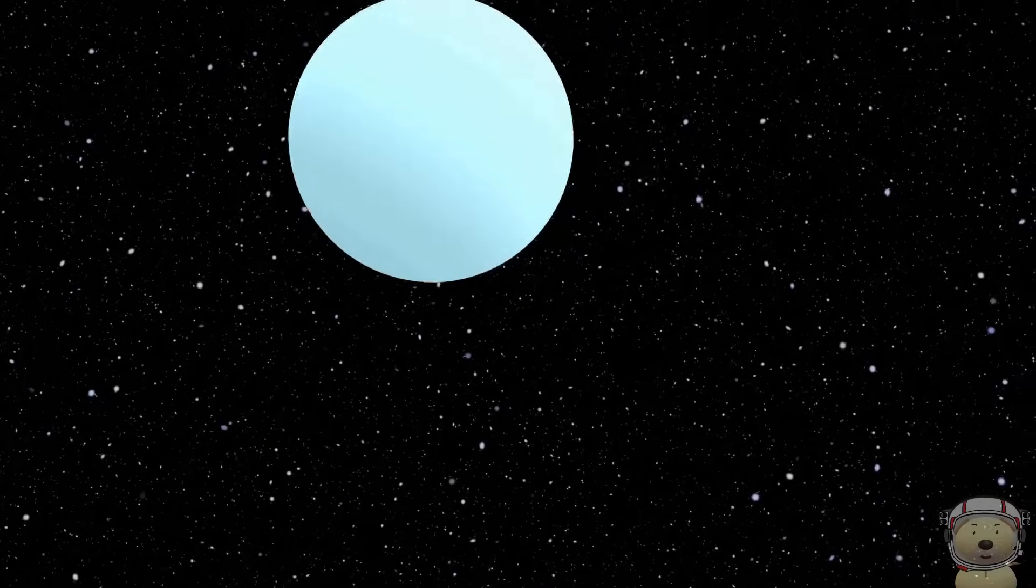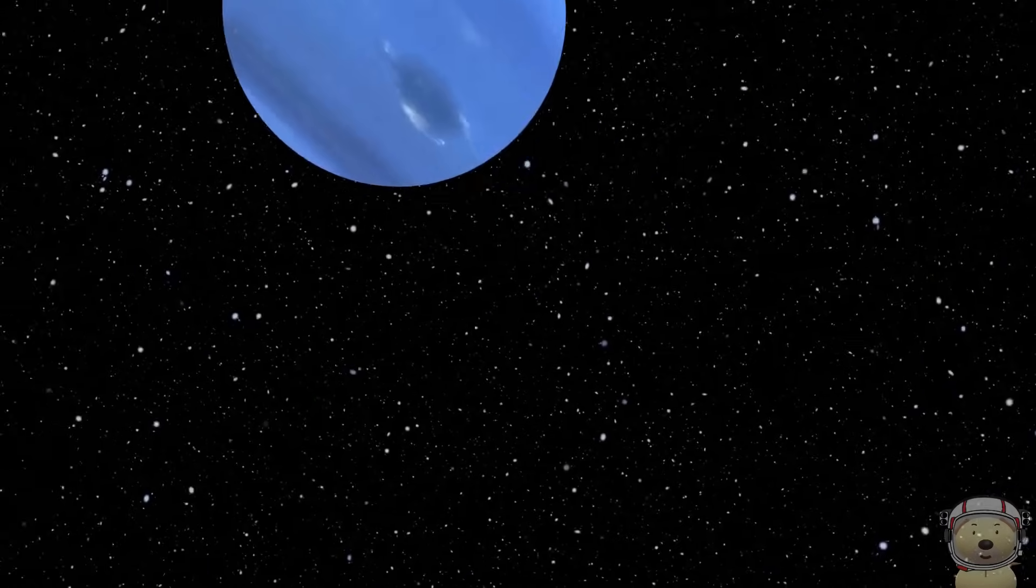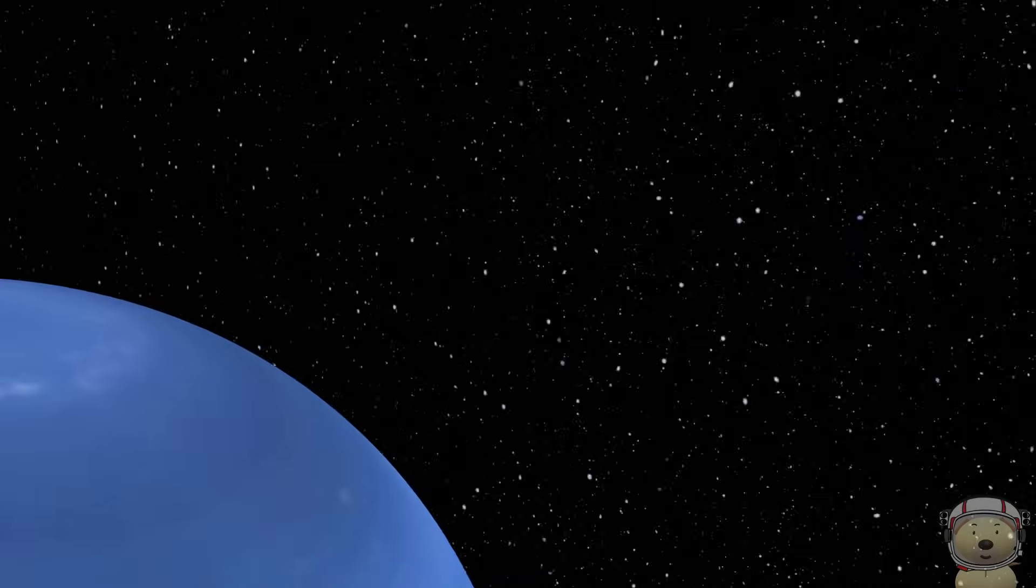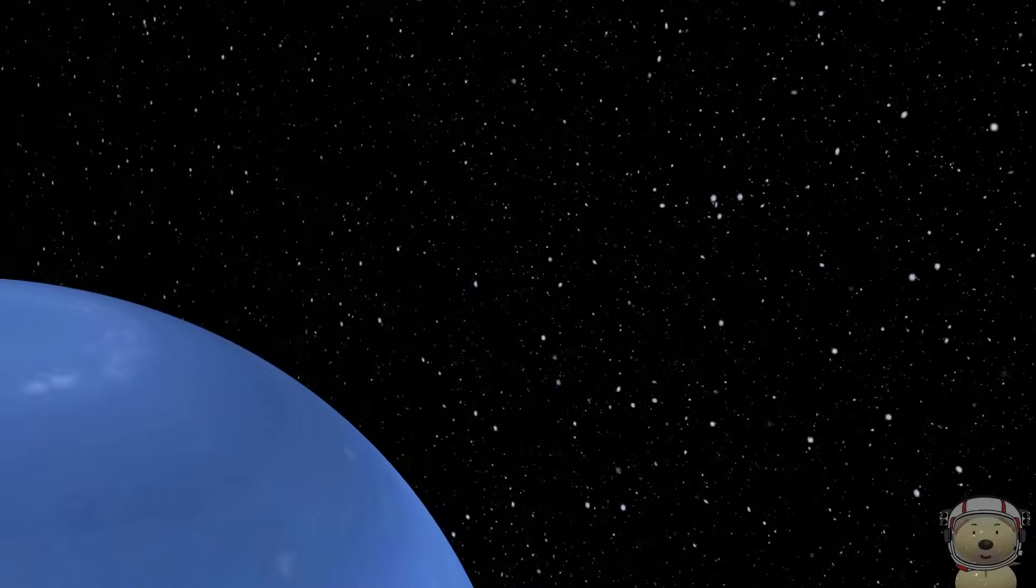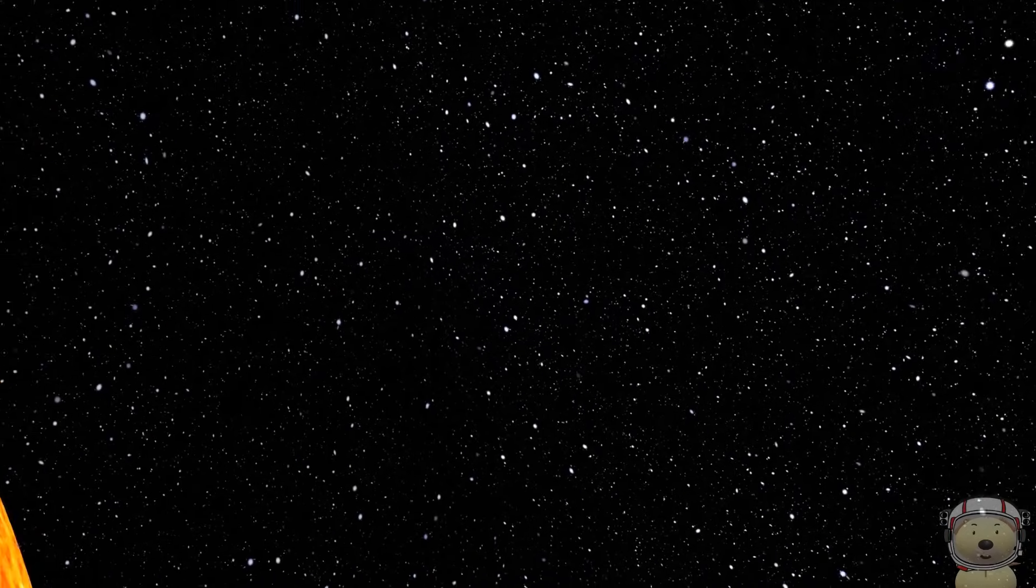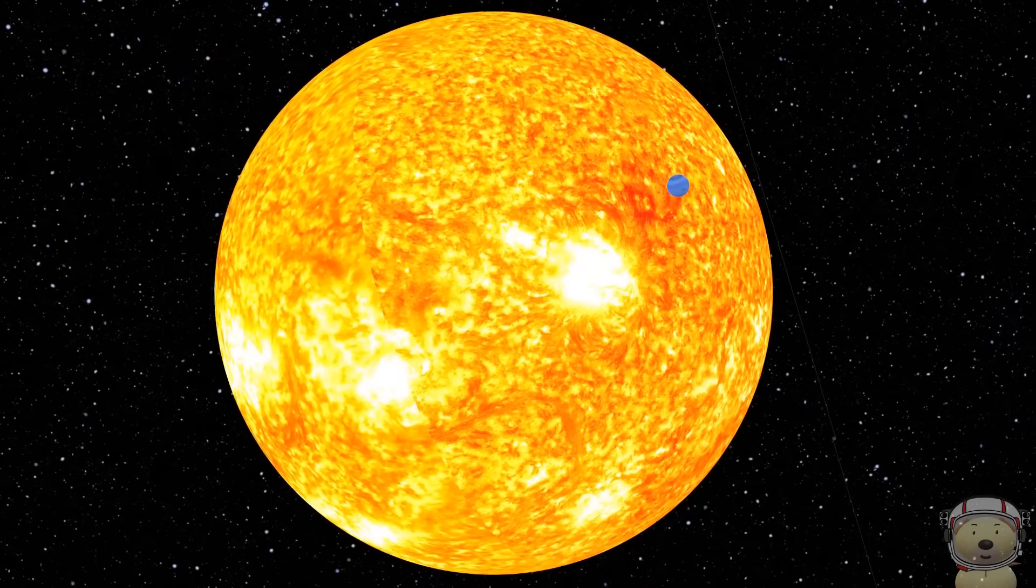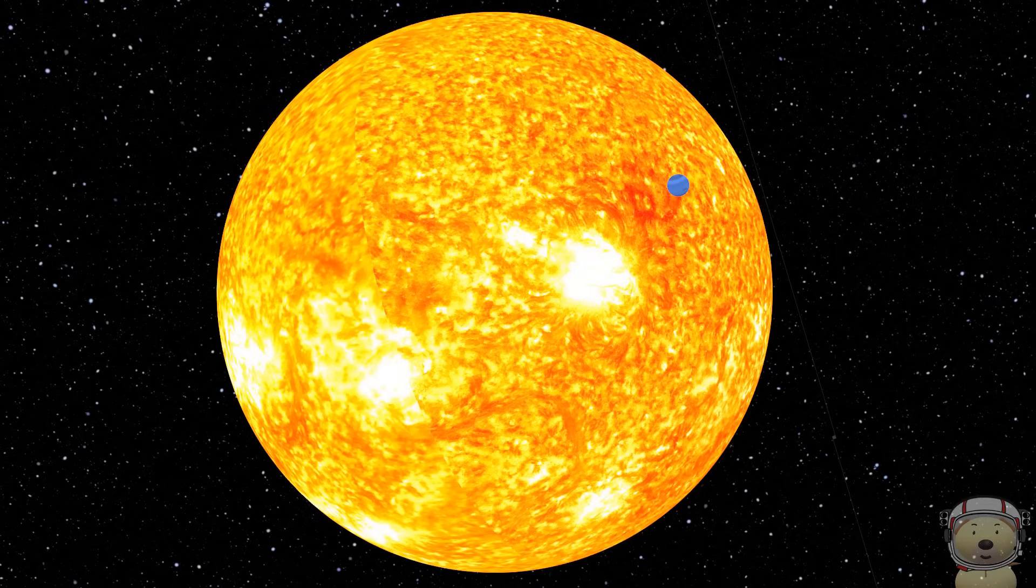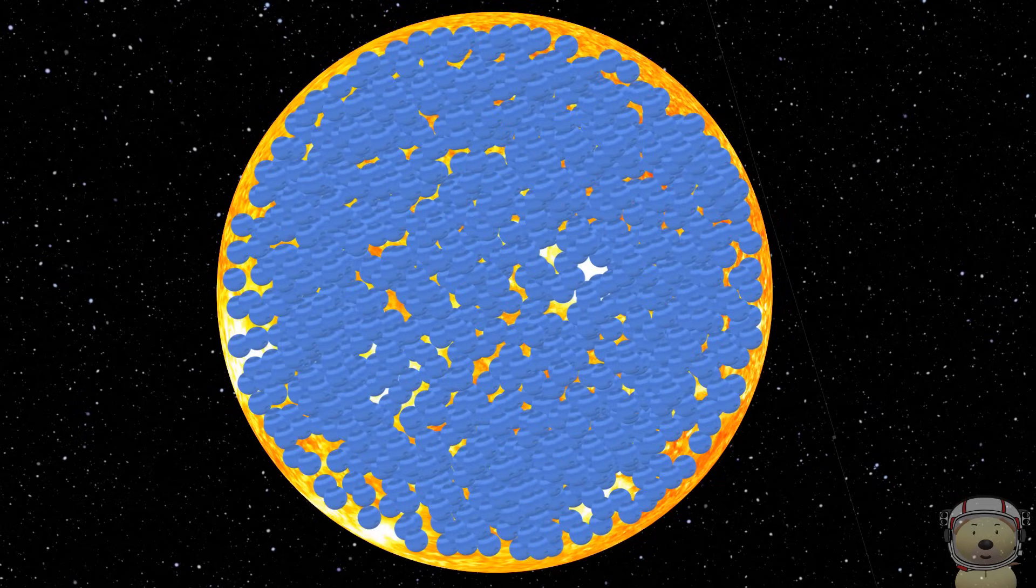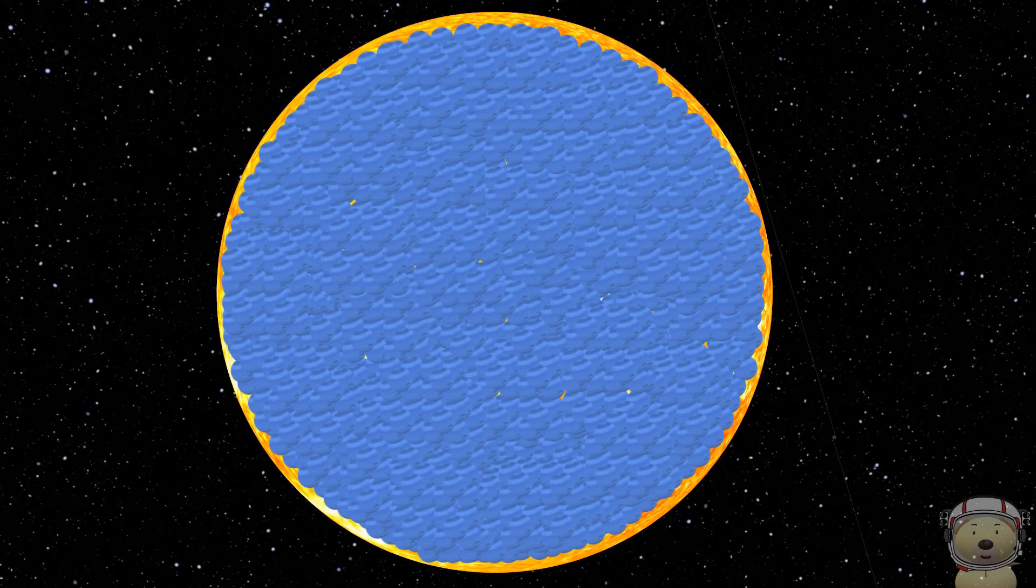Let's start near the edge of our solar system at Neptune. Let's take Neptune to the Sun. Fill the Sun with Neptunes. The Sun could hold around 23,000 of planet Neptune.